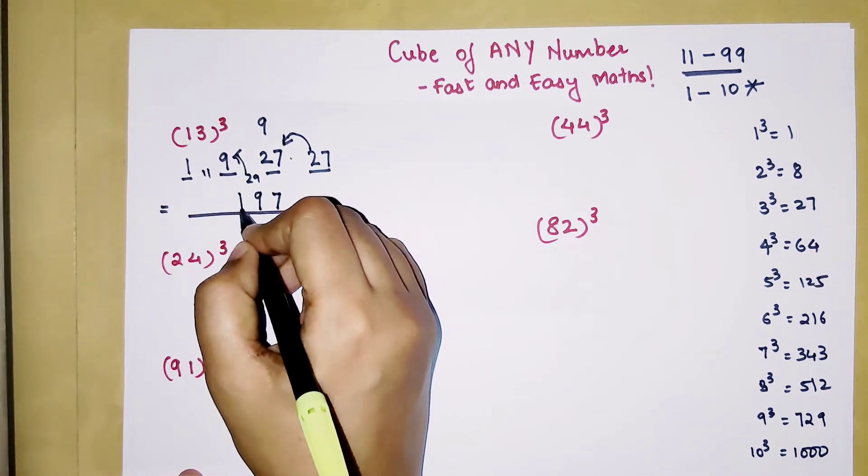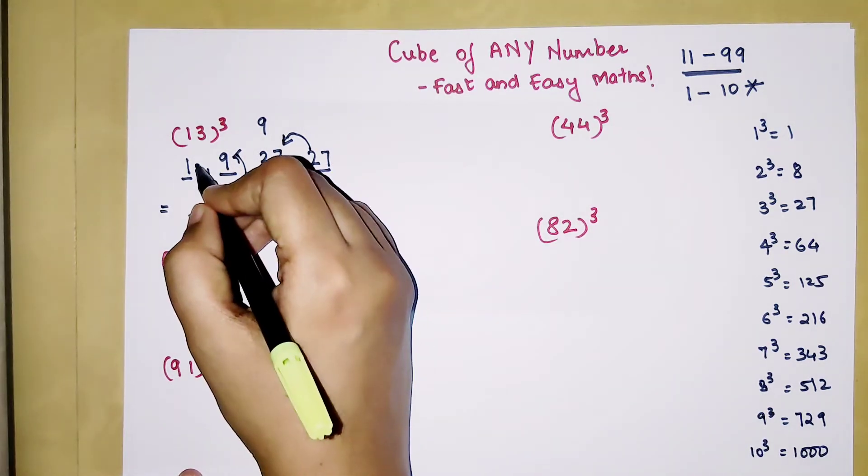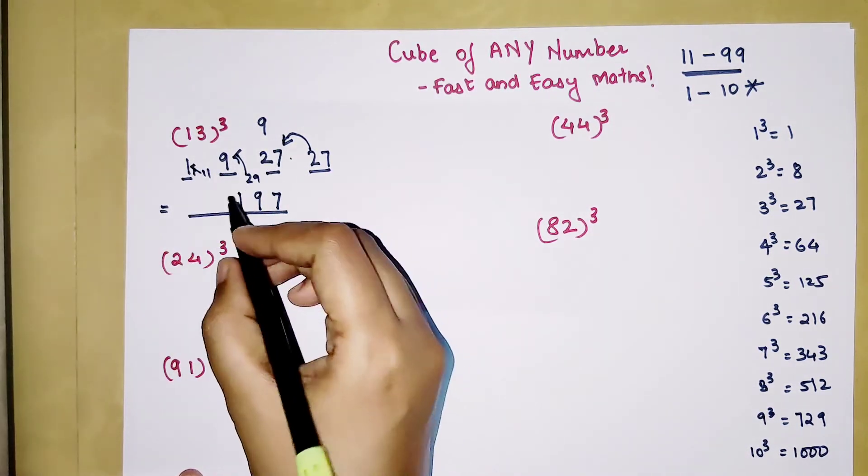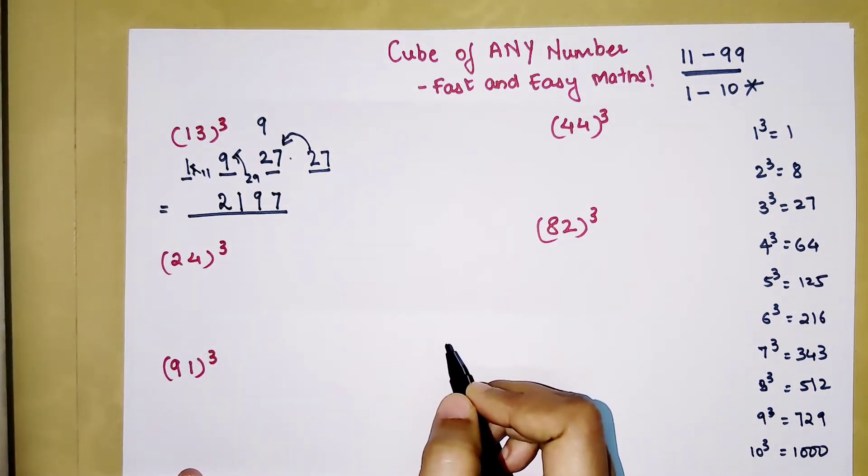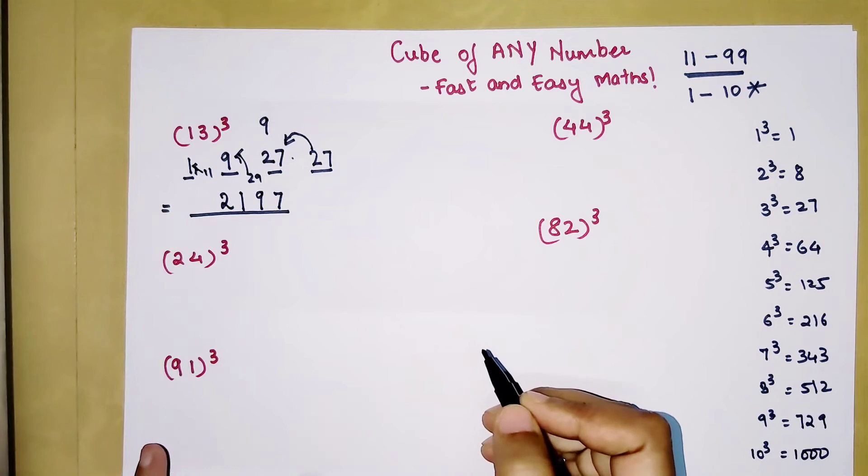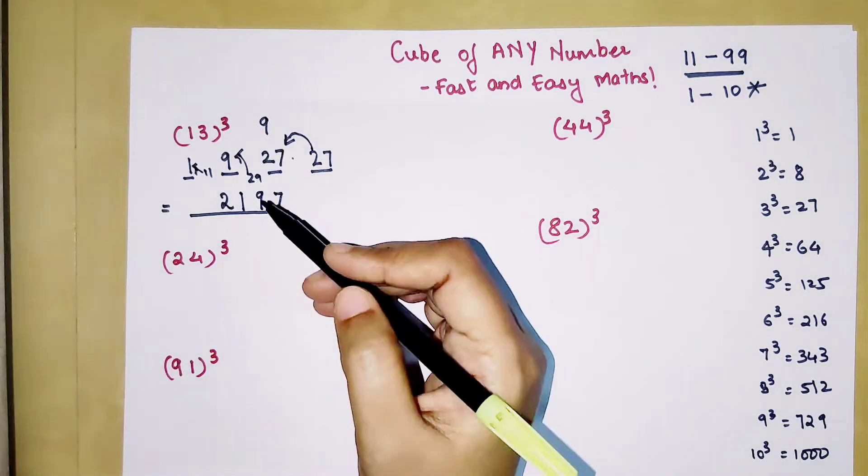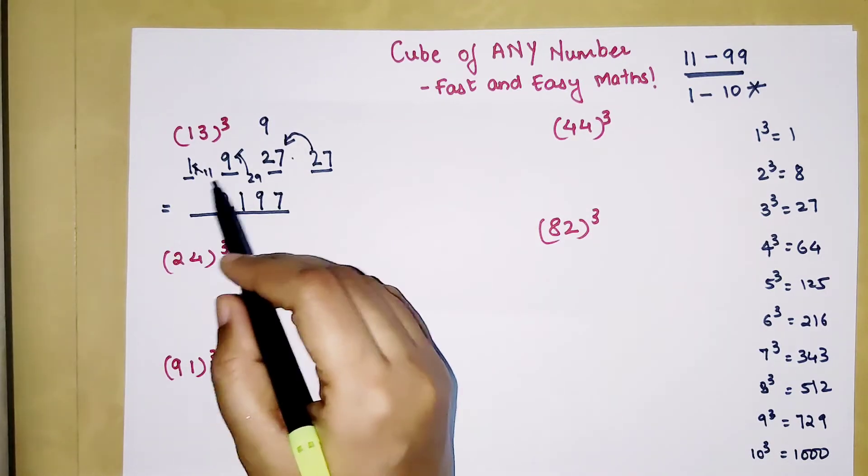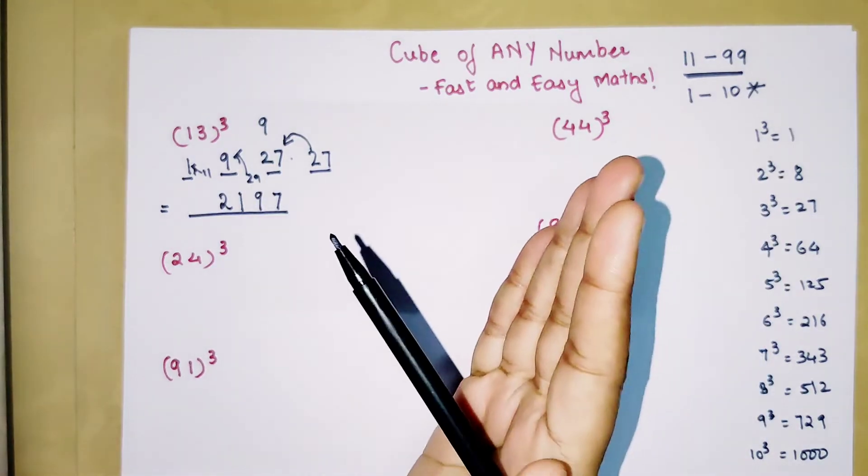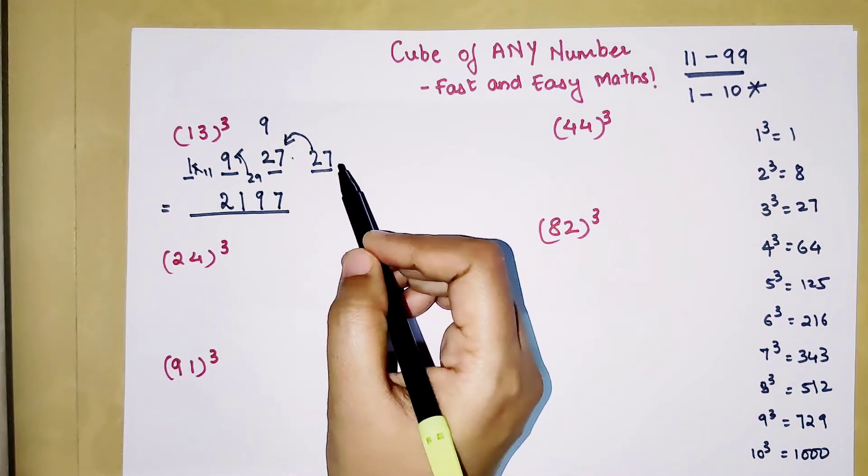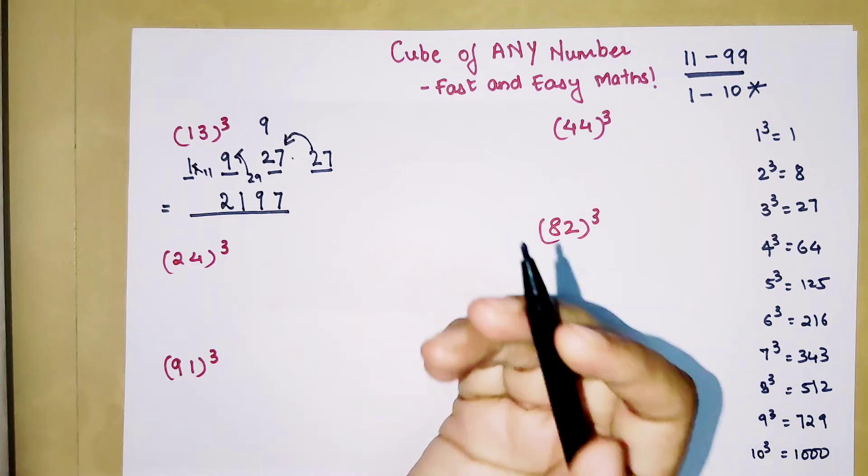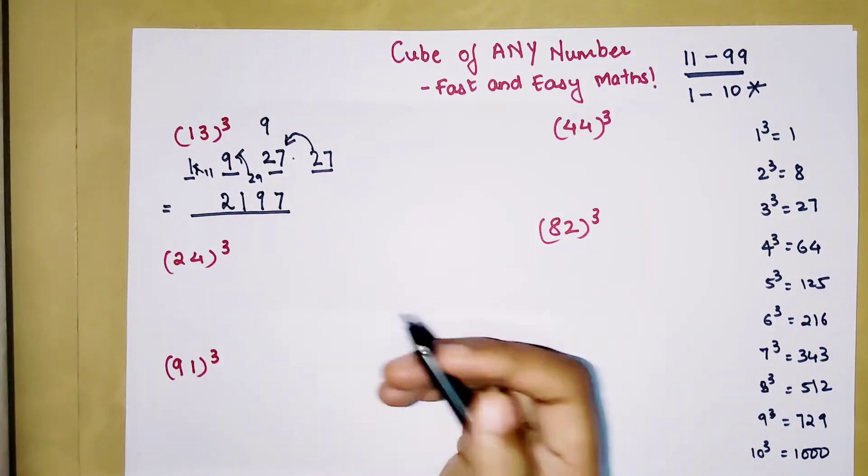So we are just going to take 1 over here. And 1 gets added to the 1 over here. So you are getting 2, 1, 9, 7. So that is your answer. In this particular case you will have a little bit difficulty while adding. You just have to remember that you are adding from your right and you are just focusing on your unit digits.